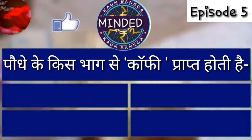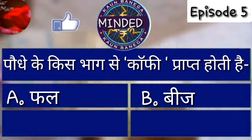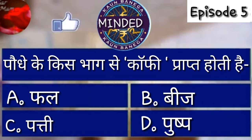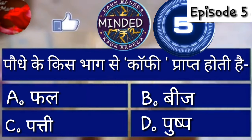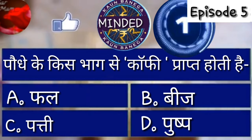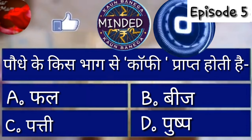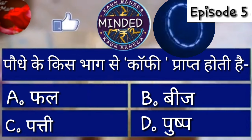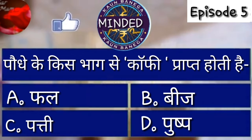Next question: पादपों के किस भाग से coffee प्राप्त होती है? A. फल से, B. बीज से, C. पत्ती से, D. पुष्प से। समय समाप्त। Coffee का answer Option B correct है - बीज से प्राप्त होती है।